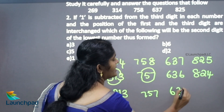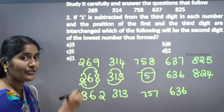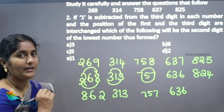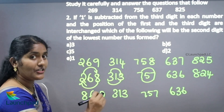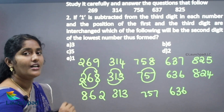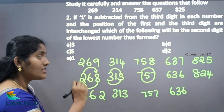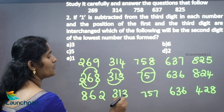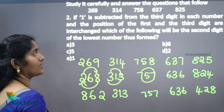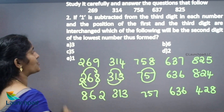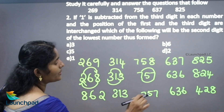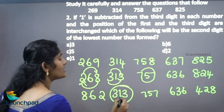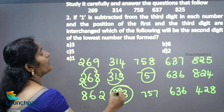Note: in your exam, do not write out all these steps — writing them will cost you time. Just work through it mentally. So our numbers are: 862, 313, 757, 636, and 428. Which of the following will be the second digit of the lowest number? The lowest number is 313, and the second digit is 1. So your answer is option E.